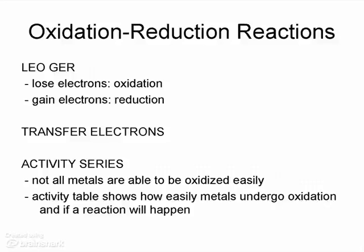Depending on how easily a metal can be oxidized, we can predict whether a redox reaction will occur. And we can use an activity table to relate how reactive each metal is with respect to oxidation.